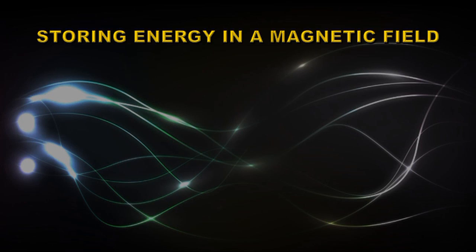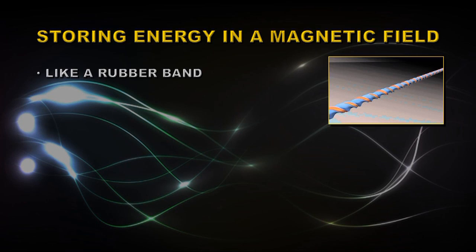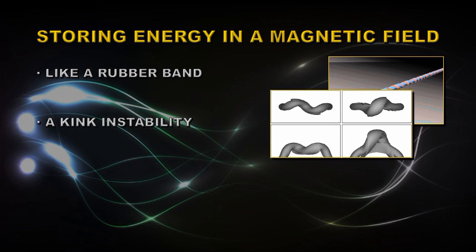Now because of this twisting and strengthening, you can store energy in a magnetic field. It's rather like a rubber band. If you take a rubber band and start twisting and twisting it, it will store energy. You could actually use rubber bands to power a propeller on an airplane, for example a model airplane.